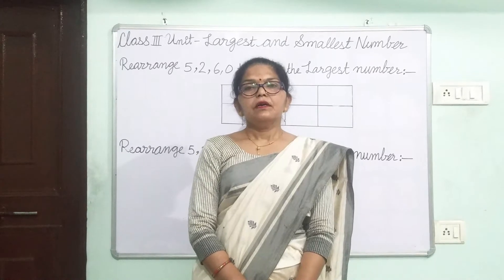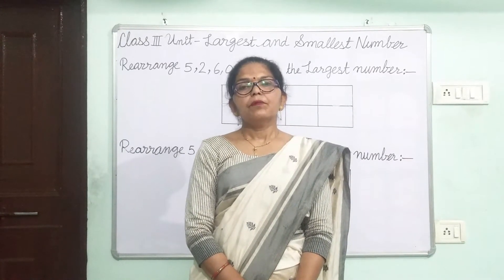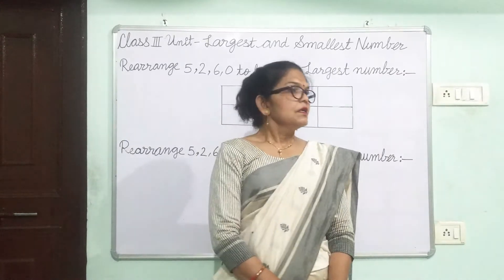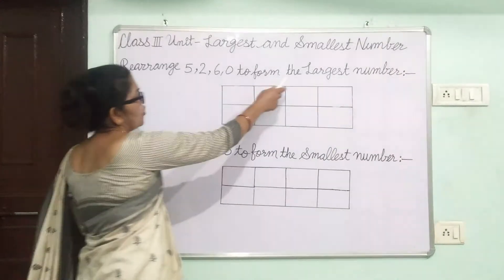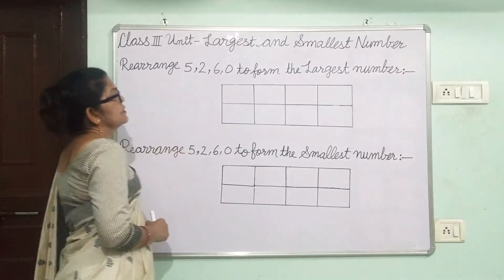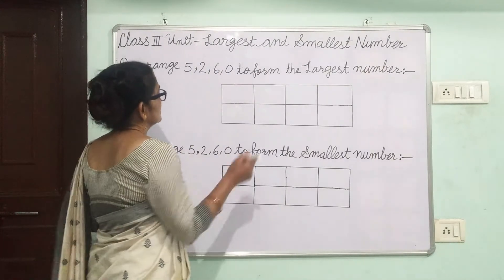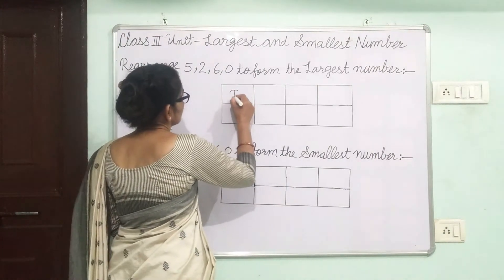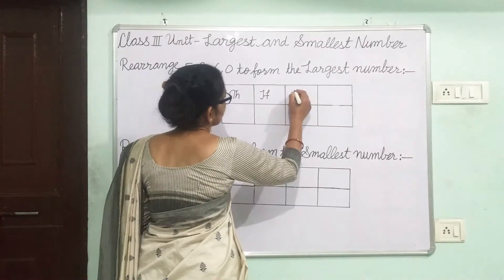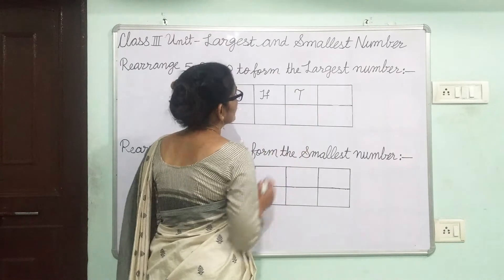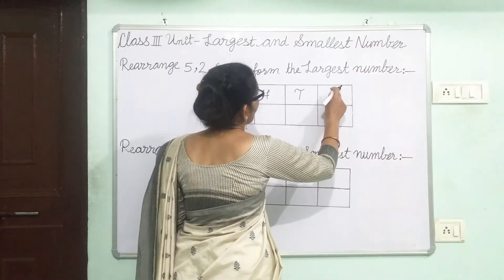We will learn how to form the largest 4-digit number from given digits. Rearrange 5, 2, 6, 0 to form the largest number. Firstly, we will draw the place value box: TH for 1000s, H for 100s, T for 10s, O for 1s.